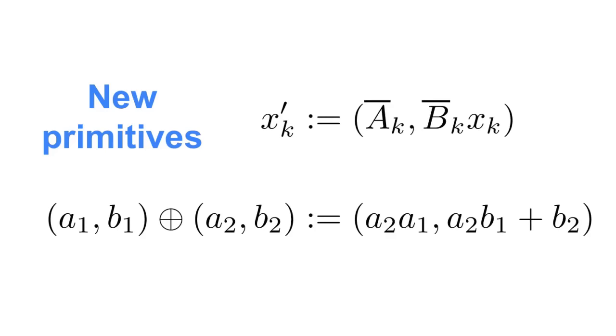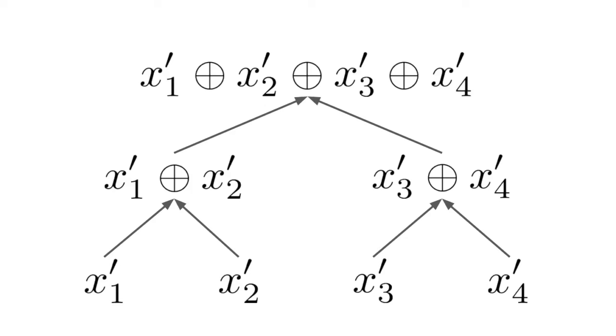We'll also define this new associative addition, where over this tuple (a1,b1) and (a2,b2), we have addition defined as the first entry being the matrix matrix multiplication of a2*a1, and the second entry being the matrix vector multiplication of a2*b1 and the vector addition of b2. And we'll proceed exactly as we did with the cumulative sum.